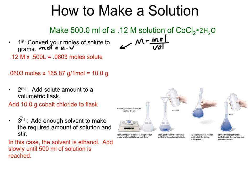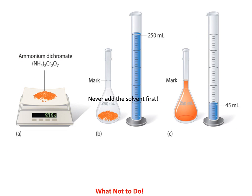The next step is very important. We're going to add the 10 grams of solute first to a piece of glassware. The proper glassware used in making solutions is the volumetric flask for precision, though you can use any glassware when in a pinch. We add the 10 grams of cobalt chloride to the flask, and then we add enough solvent — in this case ethanol — to make the required 500 milliliters of solution. Add the solvent slowly so you don't go over that 500 milliliter mark, and make sure you are stirring to get the solute to dissolve before you fill to the final mark. Always add the solute first, then add enough solvent to reach the required volume.